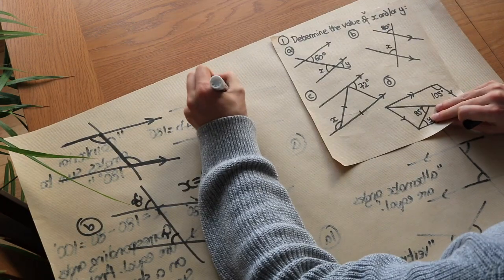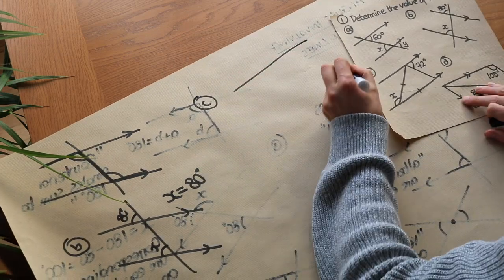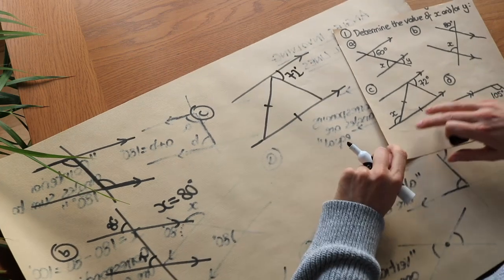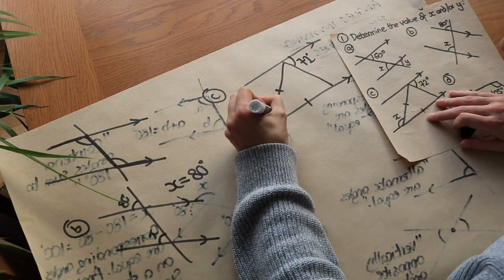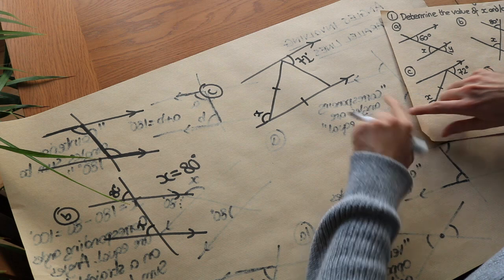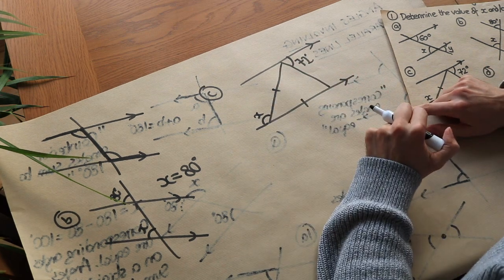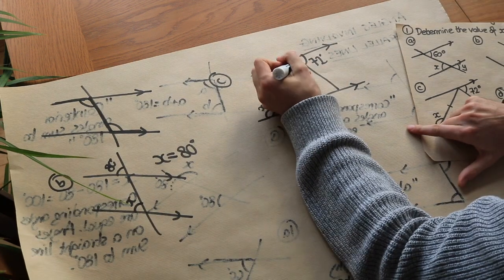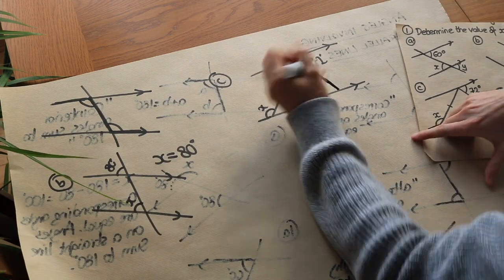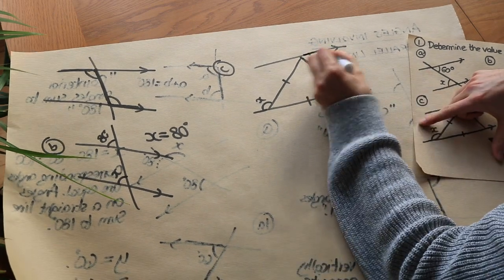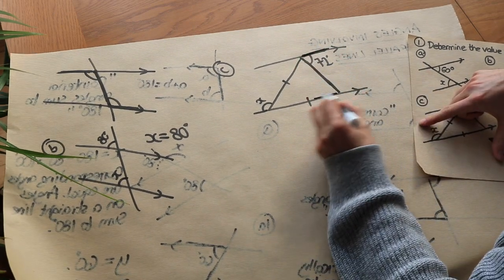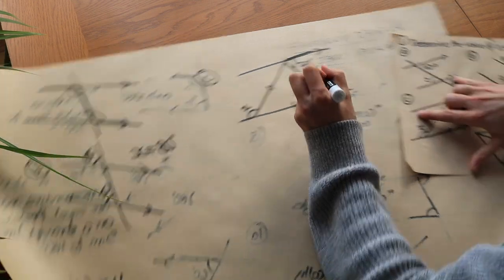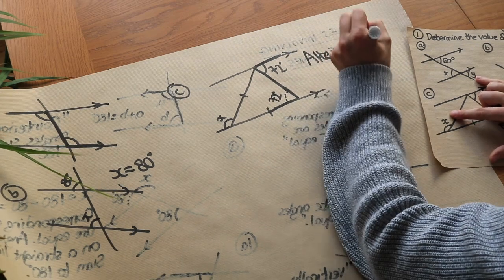Now a harder problem: two parallel lines with an isosceles triangle. We want to find X. Looking at the connecting line between the parallel lines, we fire off in two opposite directions and see a Z shape — so that angle is 72 degrees by alternate angles.